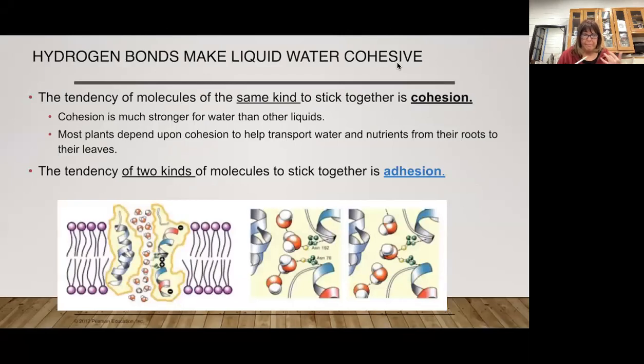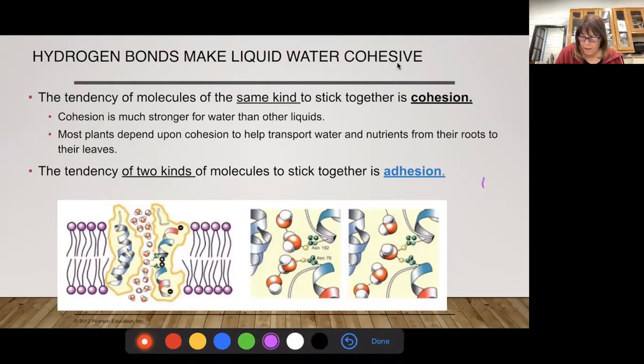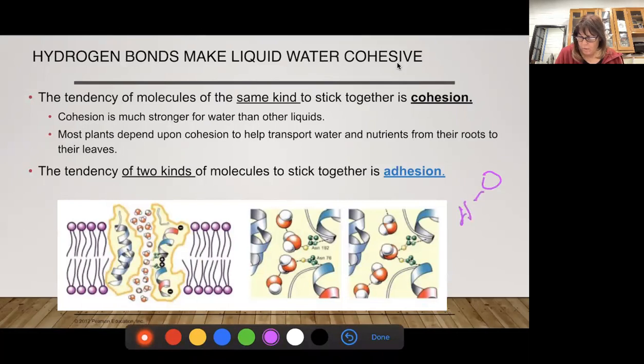We talked about covalent and ionic bonds and hydrogen bonds, and we talked about how hydrogen bonds are going to make liquid water cohesive. So we talk about water. Remember, water is polar. It has that oxygen, like my drawing, it has that oxygen with the two hydrogens and it's pulling the electrons closer so one end is partially negative, one end is partially positive.